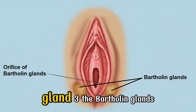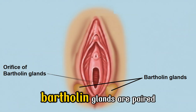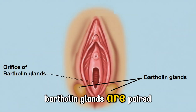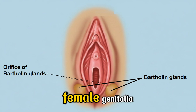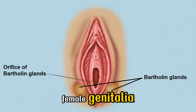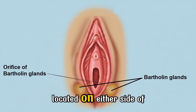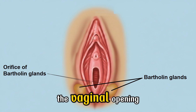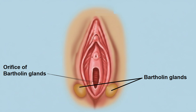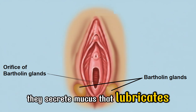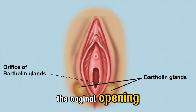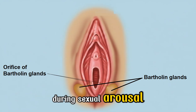The Bartholin glands are paired accessory glands of the external female genitalia, located on either side of the vaginal opening. They secrete mucus that lubricates the vaginal opening during sexual arousal.